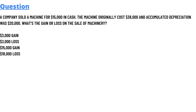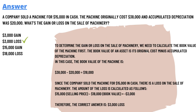either three thousand dollars loss, fifteen thousand dollars gain, or eighteen thousand dollars loss. To solve this, you need to understand that the original cost is thirty-eight thousand dollars and the accumulated depreciation was twenty thousand dollars. If we subtract the accumulated depreciation from the cost, the leftover we have is eighteen thousand dollars.